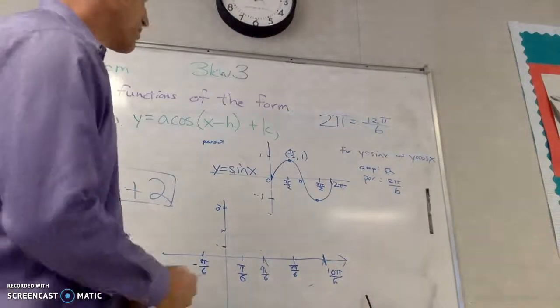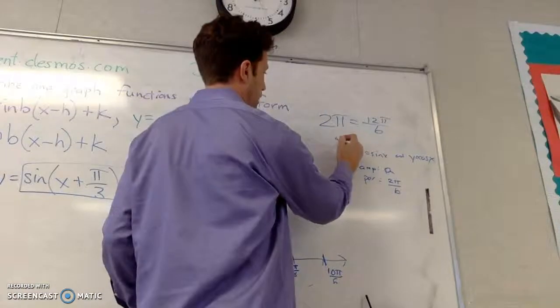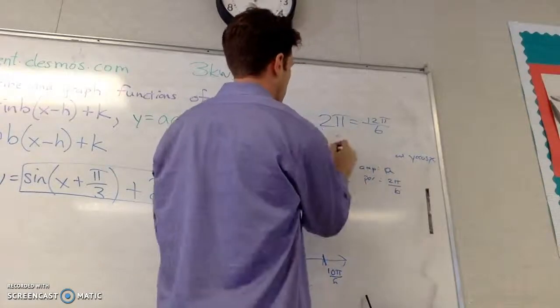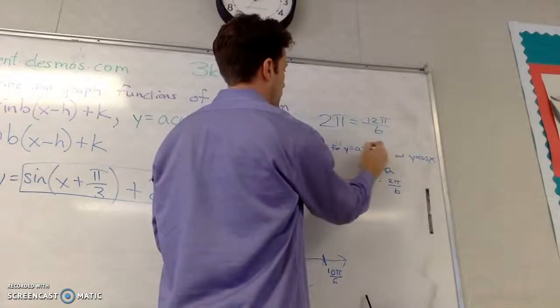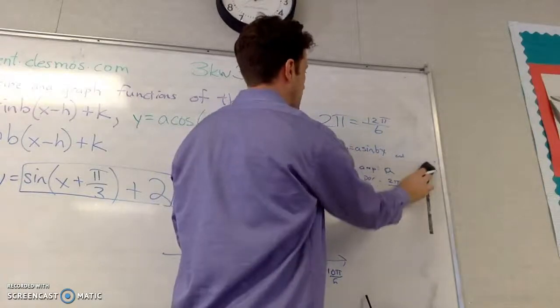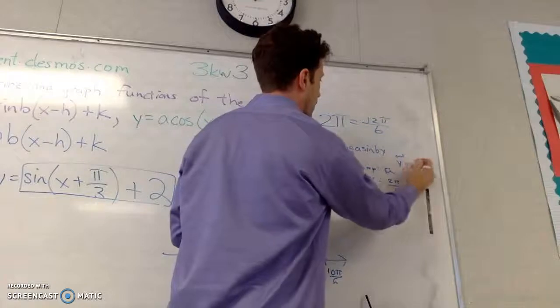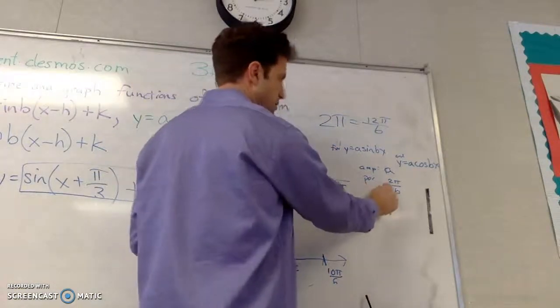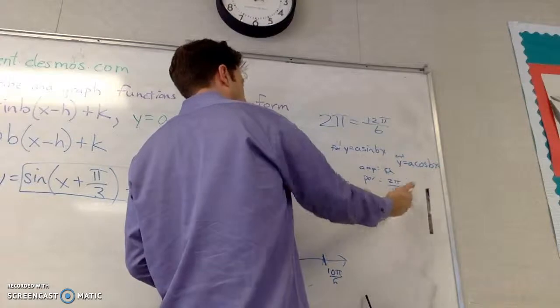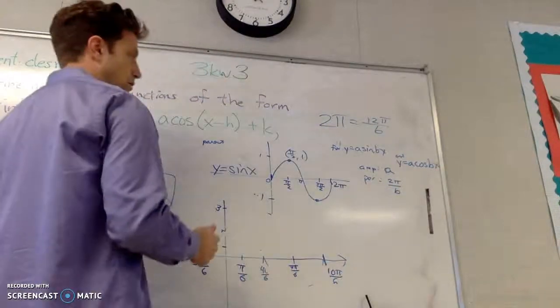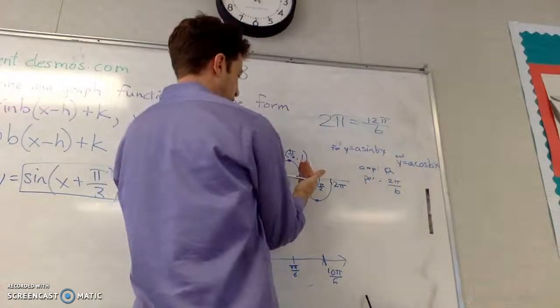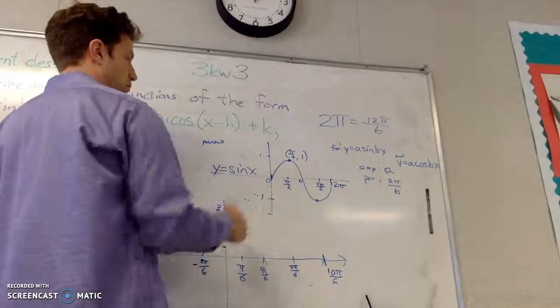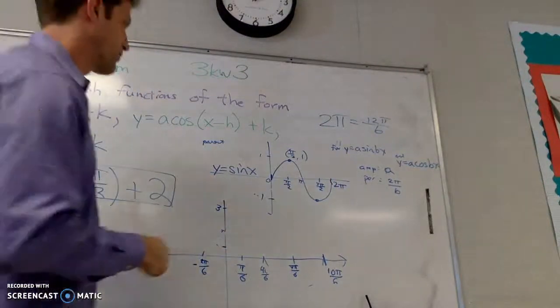So just some review of what we've been practicing. We've been practicing graphing them of the form y equals a sine bx and y equals a cos bx. And when we use that form, a is the amplitude and b limits the period. The higher b is, the more we compress the thing. If b is one, then the period is two pi.